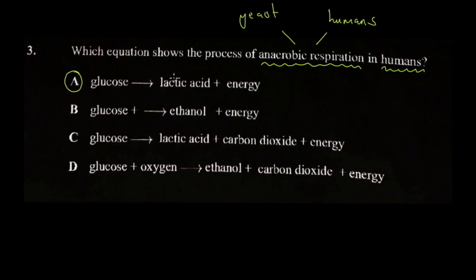Anaerobic respiration in humans is the first equation: you have glucose producing lactic acid and energy. Lactic acid is a compound and it's an energy packet as well. Anaerobic respiration is an emergency thing — you don't get as much energy or ATP as you would at rest. Part of that reason is that some energy is trapped in lactic acid. When you run upstairs, your knees have that burning sensation because of the accumulation of lactic acid. After you rest, your body converts that lactic acid further to produce more energy.